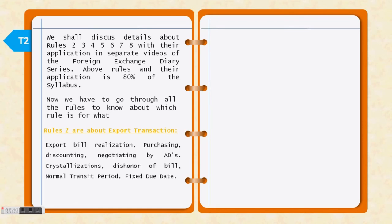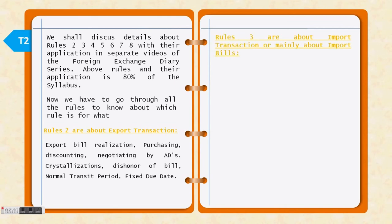Rule number 2 covers export transactions — specifically export bill realization, processing, discounting, negotiating, and crystallization. It also covers the owner of the bill, normal transactions, and fixed due date transactions.